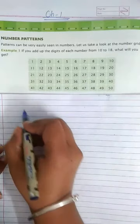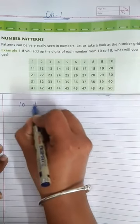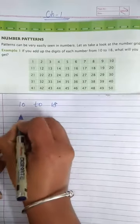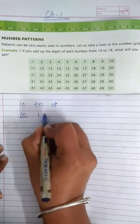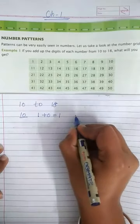When we add the digits from 10 to 18. When you add 10, the digits of 10 means 1 plus 0, answer is 1. Similarly, 11,